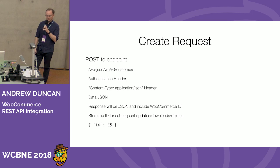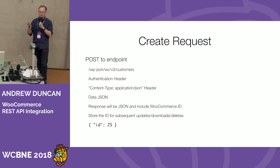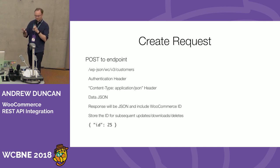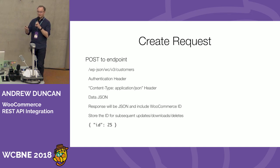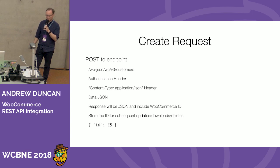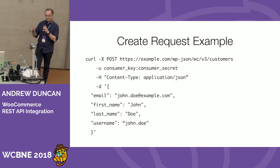You include your authentication header with your consumer key and secret. The WooCommerce API uses JSON as its data structure, so you need to encode and decode JSON, and include the Content-Type: application/json header. You'll get a JSON response back if successful. Importantly, when you create something, the WooCommerce API response includes the WooCommerce ID, which you generally want to capture and store, because if you ever want to update, get, or delete that record through the API, you'll need to reference that ID.